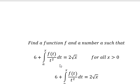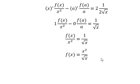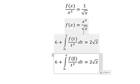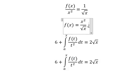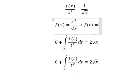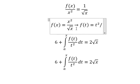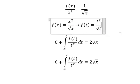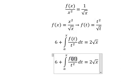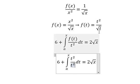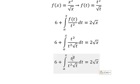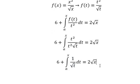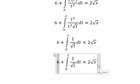Now we return back to this one. So f of t — we put t in here — so that means we have f of t equals to t squared over the square root of t. So I will put this one in here. Now we need to simplify this one over this one. Next I will put number six in here.